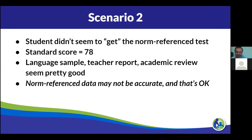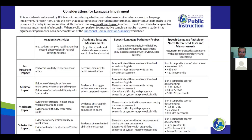Another scenario: maybe the student didn't quite engage with the norm reference test — once it started getting hard, they stopped trying. Maybe they're new to school and it was just a weird situation. I get that standard score, but then I take a language sample, get a teacher report, look at the academic review — and that's not as congruent. It's showing a higher level of performance, showing that things are relatively mild. In this case, I may not sweat the standard score and realize those data weren't accurate. I have the ability to not just rely on that standard score. If everything else is showing no impact or minimal impact, I can be confident in that comprehensive assessment data and possibly determine the student is not eligible for services.